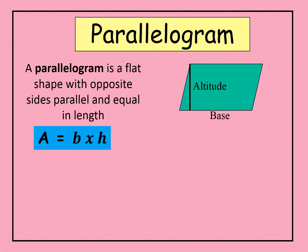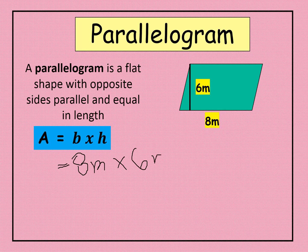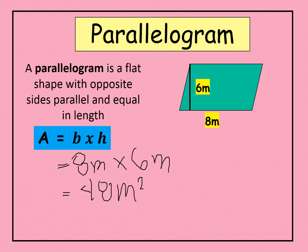For better understanding, let's have an example. We have a parallelogram with a base of 8 meters and a height of 6 meters. Substituting into the formula: 8 meters times 6 meters gives us 48 square meters. So the area of this parallelogram is 48 square meters.